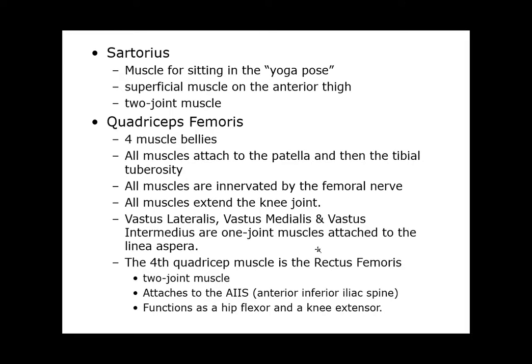The fourth muscle, the most superficial, is the rectus femoris — a two-joint muscle that attaches to the AIIS, the anterior inferior iliac spine of the pelvis. Since it's a two-joint muscle, it's a knee extensor as we saw, and also a hip flexor because the line of pull is anterior to the hip. All of these muscles are knee extensors because their line of pull is anterior to the knee joint.